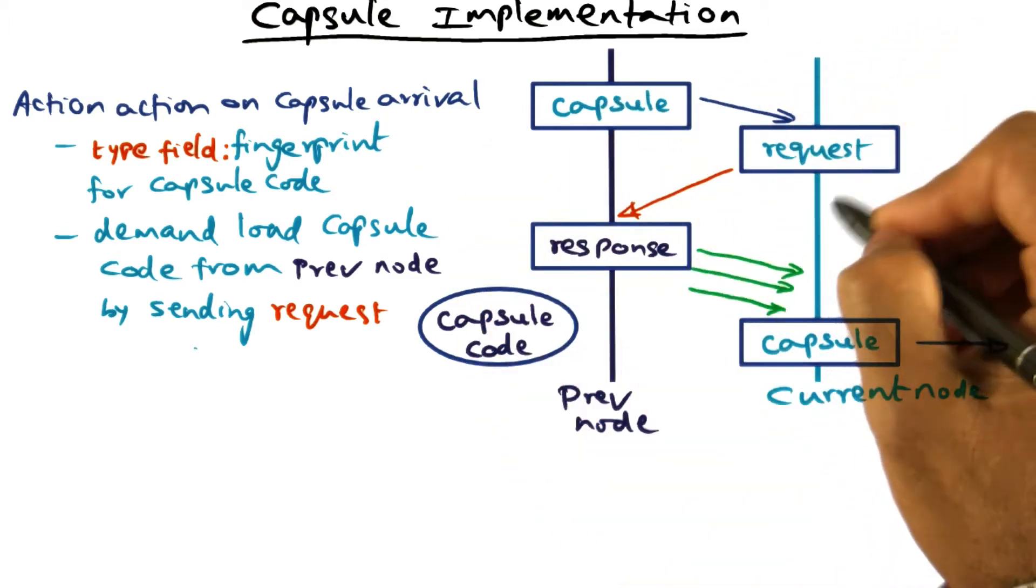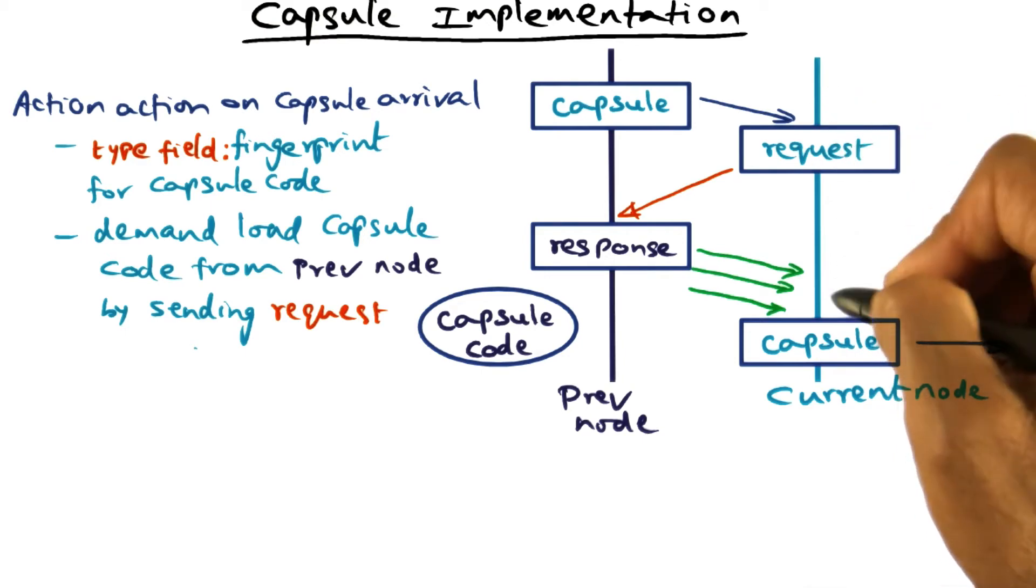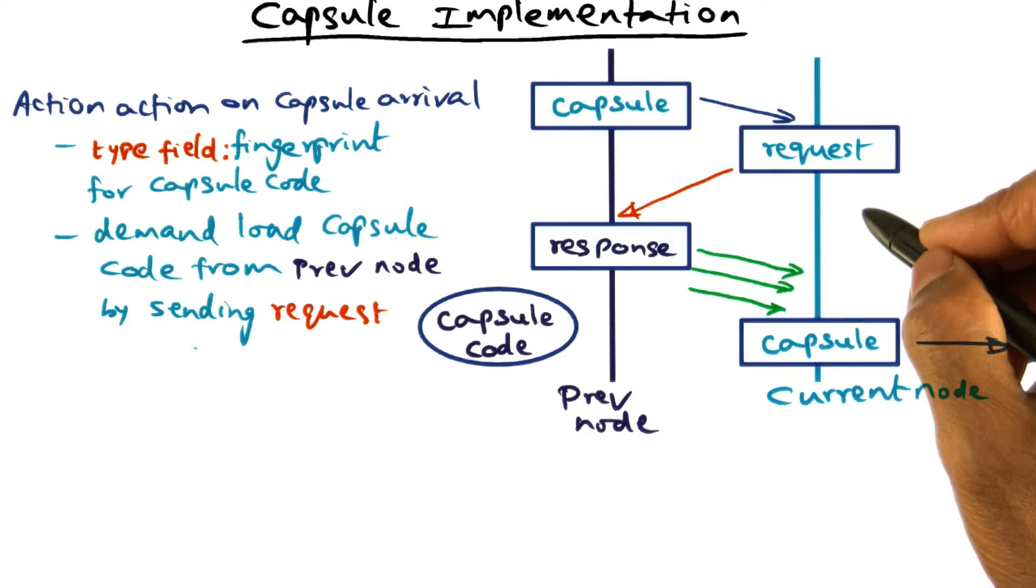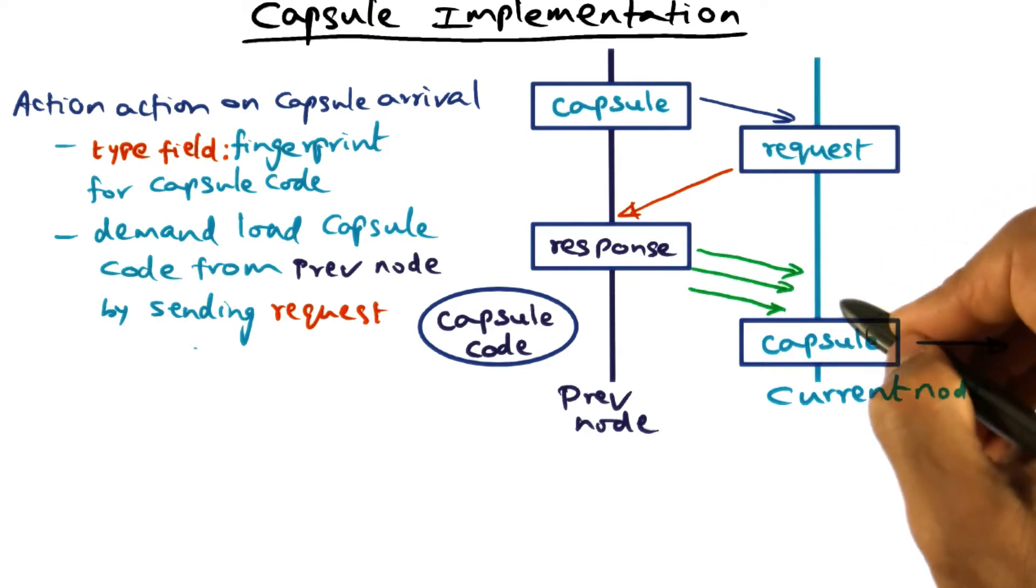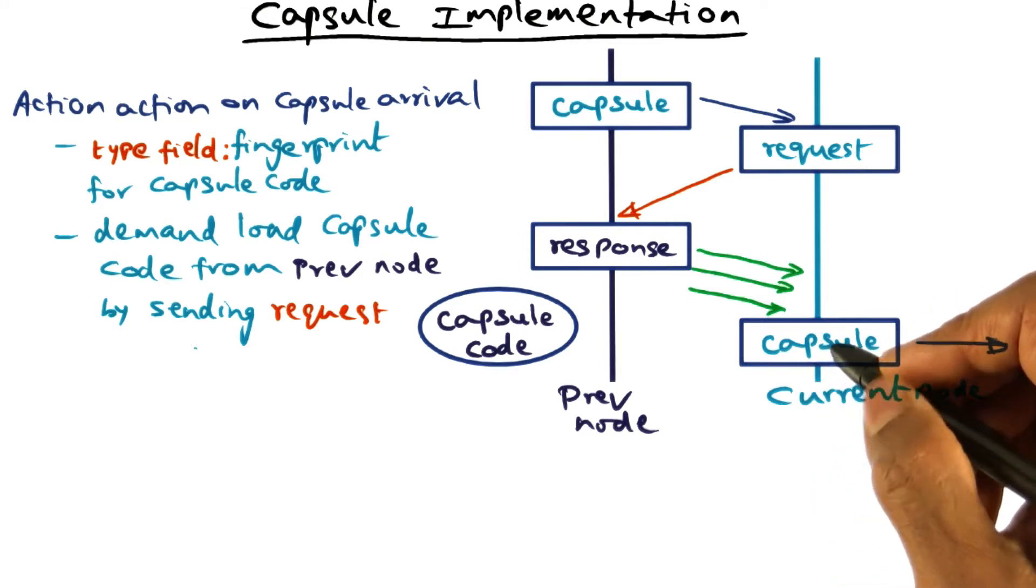So when a node receives a capsule, one of two things are possible. The first possibility is that this node has seen capsules of this type before. If that is the case, then it is quite likely that in the soft store of this node, the code that corresponds to this type is already existing. In which case, it's a simple thing for the current node to retrieve the code from its soft store and execute the capsule and proceed with forwarding this capsule on towards its desired destination.